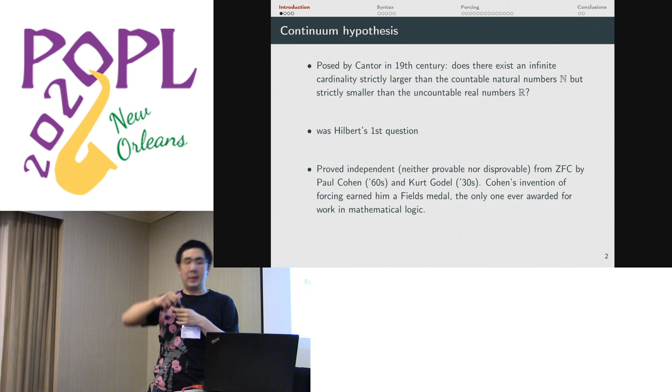This was Hilbert's first question. He had a famous list of 20 or so questions that he presented at the First International Congress of Mathematicians. This was number one. It was unresolved until the 60s when Paul Cohen invented forcing, continuing work by Gödel. His invention of forcing earned him a Fields Medal, the only one ever awarded for work in mathematical logic. So mathematicians thought it was important.